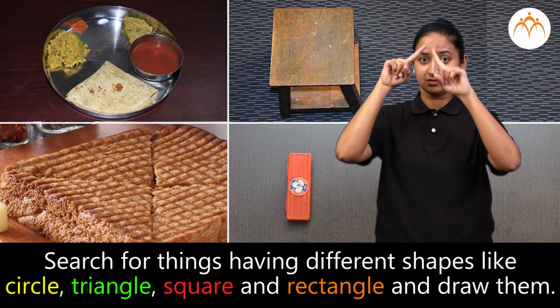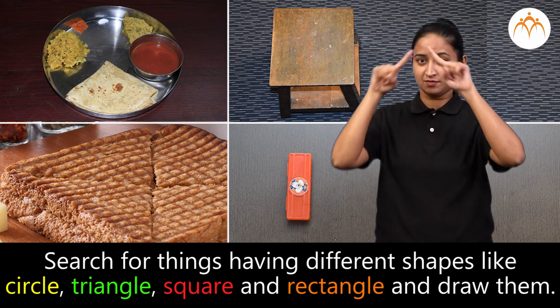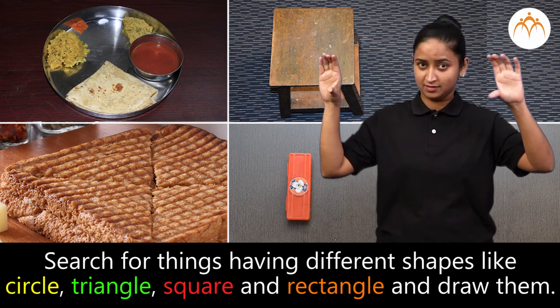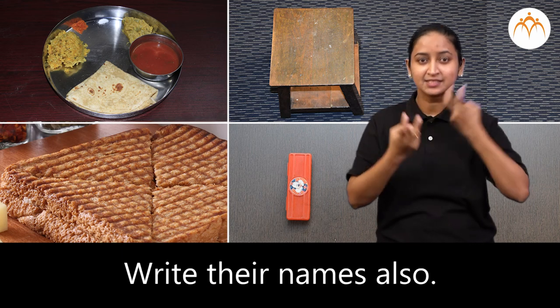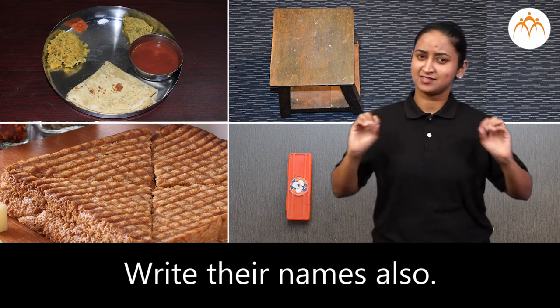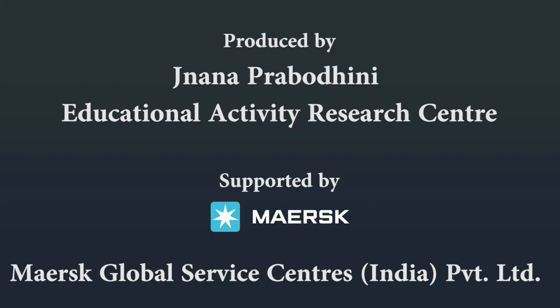Activity. Search for the things having different shapes like circle, triangle, square, rectangle and draw them. Write their names also.